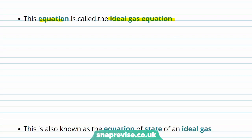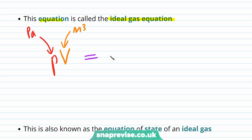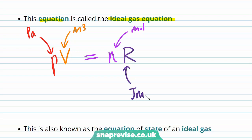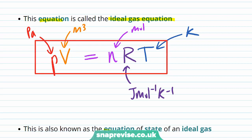Let's write it out in full. Pressure in pascals times volume in metres cubed equals the number of moles (units: moles), multiplied by the molar gas constant (units: joules per mole per Kelvin), multiplied by temperature in Kelvin. This equation is also known as the equation of state of an ideal gas.